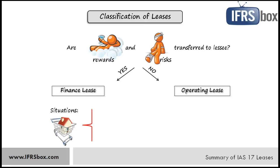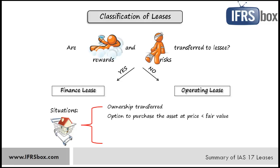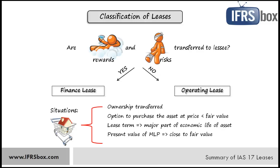What are those five situations? First, the lease transfers ownership of the asset to the lessee by the end of the lease term. Second, the lessee has an option to purchase the asset at a price expected to be sufficiently lower than fair value at that time — at inception it's almost certain the option will be exercised. Third, the lease term is for the major part of the economic life of the asset, even if title is not transferred. IAS 17 does not say how much is a major part, but US GAAP states 75%, so we can assume something like that. Fifth, the leased assets are of such a specialized nature that only the lessee can use them without major modifications.